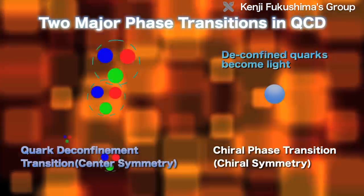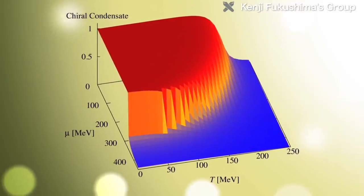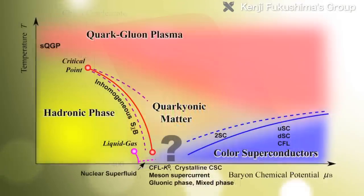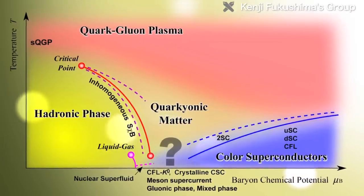In 2003, the first clear explanation was given using a theoretical model advocated by the Fukushima group. Currently, this model is one of the most widely used tools in quark-gluon plasma research.